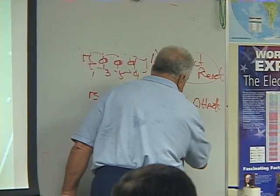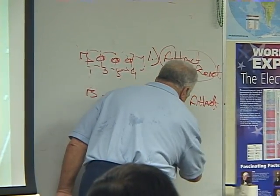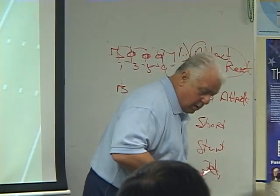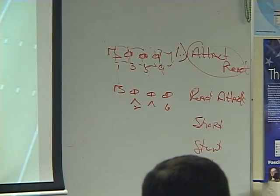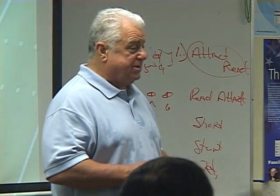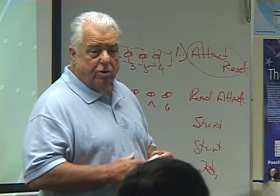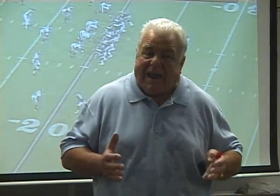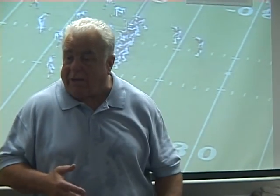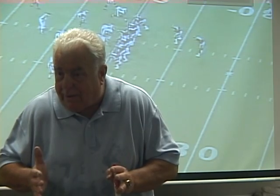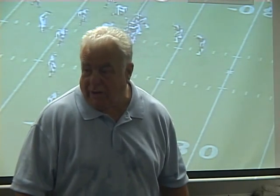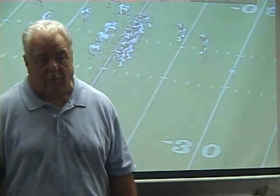Then the other methods are: short, stunt, and jet. Short can be short yardage — it's a low pad level, short-yardage charge. Stunt — I've got to talk on stunts tomorrow. We have a stunt stance where we tighten our base just a little and put our weight on our push foot. We don't want to tip it, but we call it our stunt stance. Because we're not in that jet — on jet we're going to elongate and blow and go.